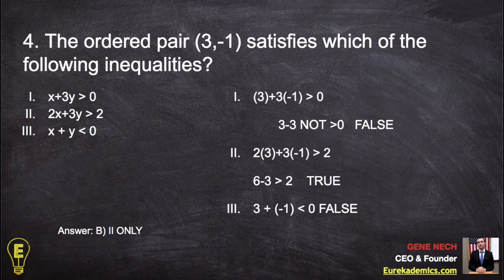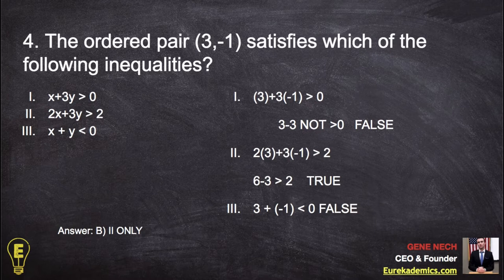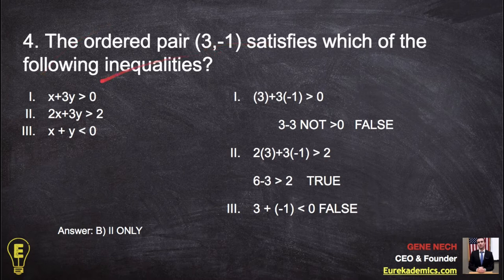Number four: the ordered pair three negative one satisfies which of the following inequalities. When you get one of these which of the following satisfies questions, they're asking three negative one, is it true for cases one, two, three? Well let's see.